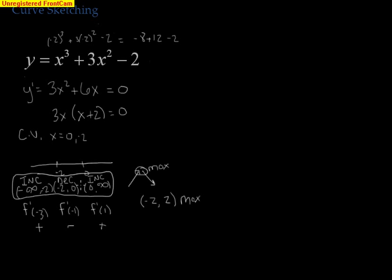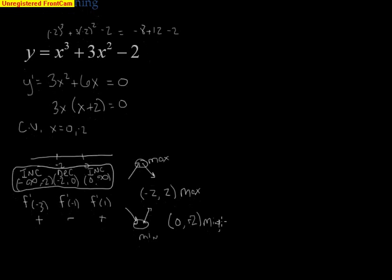On the next two intervals the function goes from decreasing to increasing, indicating a minimum. Plugging 0 into the original function gives 0 plus 0 minus 2, which equals negative 2. So there's a minimum at 0 comma negative 2.